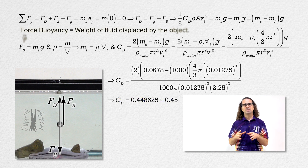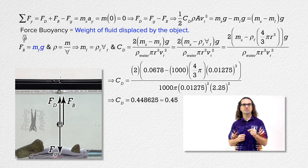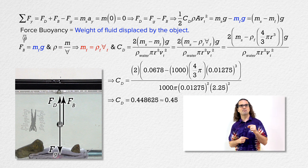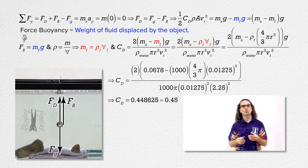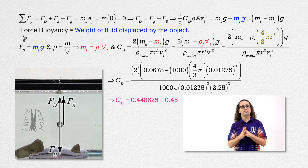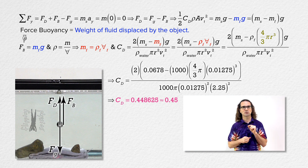The buoyancy force equals the weight of the fluid displaced by the object — in other words, the mass of the displaced fluid times acceleration due to gravity. Because density equals mass divided by volume, we can substitute the density of water times the volume of the sphere for the mass of the water displaced by the sphere. The volume of a sphere equals 4/3 pi times radius cubed. We get the drag coefficient of this sphere to be 0.45. However, remember this is not a great way to solve for the drag coefficient of the steel sphere — we would need a much deeper vessel of water to ensure the sphere is moving at its terminal speed.